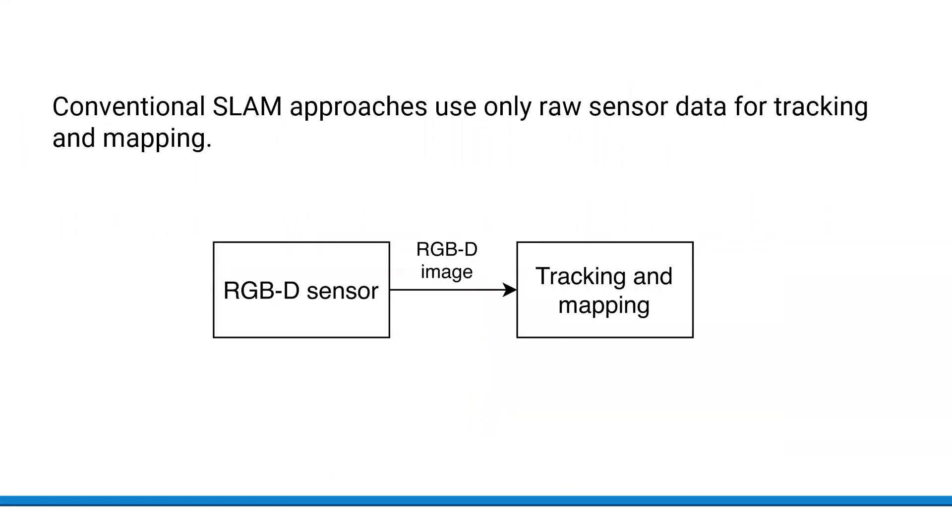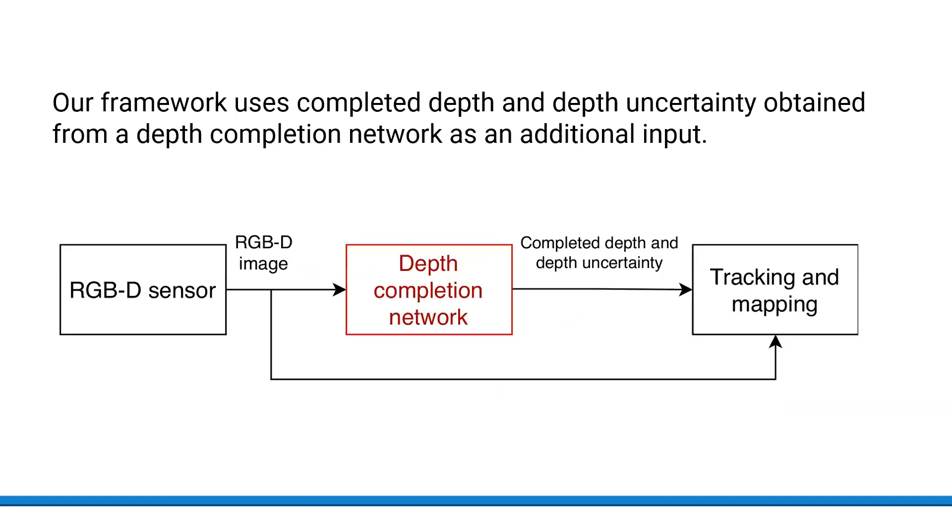Whereas conventional approaches in robotics use only the raw sensor data to perform tracking and mapping, we propose to complement the raw RGBD data using a probabilistic depth completion strategy. Our framework uses the completed depth and depth uncertainty obtained from a depth completion network as an additional input.